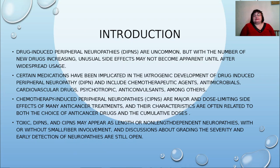Drug-induced peripheral neuropathy, abbreviated as DIPN, is uncommon, but with the number of new drugs increasing, unusual side effects may not become apparent until after widespread usage. Certain medications have been implicated in the iatrogenic development of DIPN, including chemotherapeutic agents, antimicrobials, cardiovascular drugs, psychotropics, and anticonvulsants, among others. Chemotherapy-induced peripheral neuropathy (CIPN) is a major and dose-limiting side effect of many anti-cancer treatments.